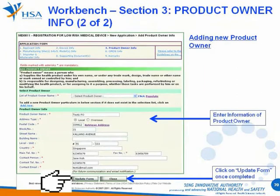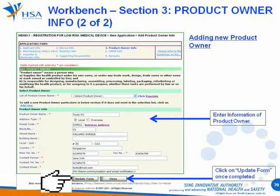Next, fill in the necessary information: Company Name, Address Type, Postal Code, Block Number, Street Name, Building Name, Level or Unit, Contact Numbers and Contact Person. Click the Update Form button when finished.